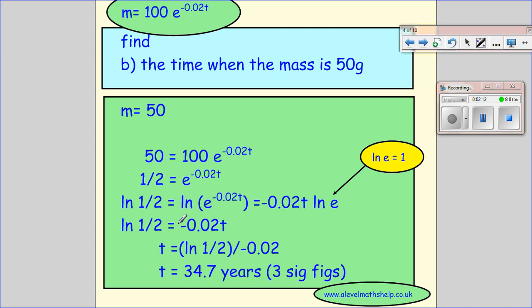So ln of a half equals minus 0.02t. And you don't need the other line. You can just go straight from there to there. So we can rearrange that, divide by our minus 0.02, and then we get our answer.